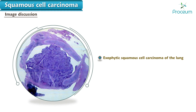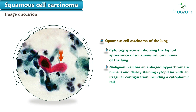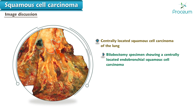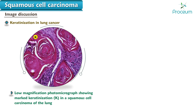A whole mount section through the endobronchial exophytic squamous cell carcinoma of the lung can be seen in this picture. A cytology specimen shows the typical appearance of squamous cell carcinoma of the lung. The malignant cell has an enlarged hypochromatic nucleus and darkly staining cytoplasm with an irregular configuration including a cytoplasmic tail. Peripherally located squamous cell carcinoma with extensive central necrosis and cavitation can be seen in this gross picture. A bilobectomy specimen showing a centrally located endobronchial squamous cell carcinoma associated with post-obstructive bronchiectasis is seen here. A high magnification photomicrograph shows intercellular bridges or desmosomes, which appear as refractile striations between distinct cytoplasmic borders.